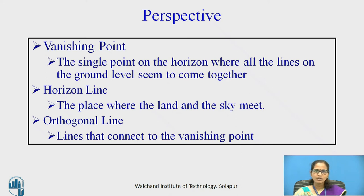Perspective does not represent the true shape or the size of an object — it is just the 3D model presented on paper. In the one-point perspective, you have one vanishing point, whereas in the two-point perspective, you have two vanishing points.